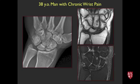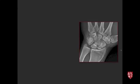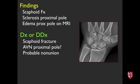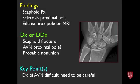Next case, 38-year-old with chronic wrist pain. There's sclerosis within the proximal pole of the scaphoid, a lucent line indicating a fracture, and edema in the proximal pole on MRI. This is a scaphoid fracture — probably a nonunion given the chronic appearance. The proximal pole sclerosis may represent AVN. IV contrast can help assess vascularity: if the bone enhances, there may still be enough vascularity to allow healing with surgery, whereas true AVN means the bone cannot heal.